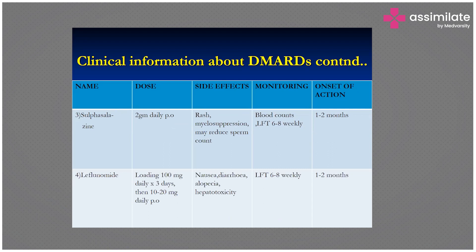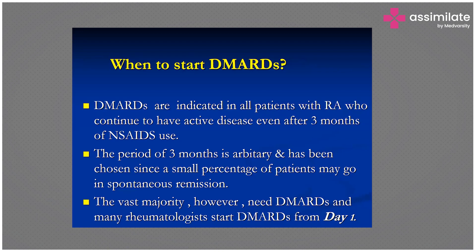Always perform routine testing for RA patients — at minimum CBC, LFT, and RFT — to check for hepatotoxicity, and check CRP. DMARDs are indicated for all patients with active disease. Many rheumatologists start DMARDs from day one, beginning with methotrexate, and continuously monitor patients with lab investigations.